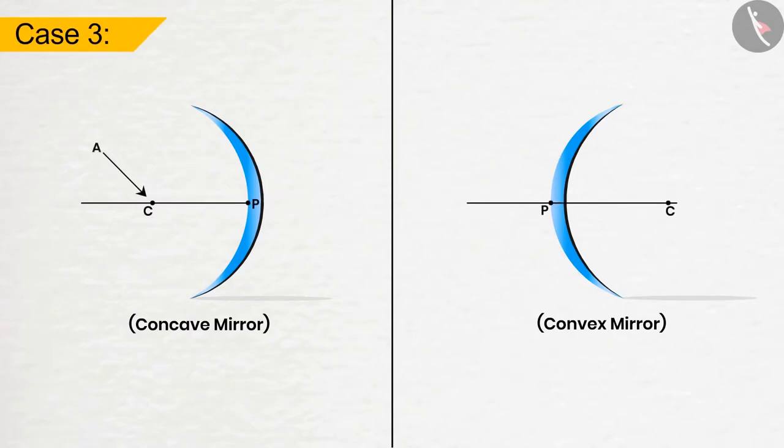Case 3. If the ray of light passes through the center of curvature of the concave mirror or appears to go towards the center of curvature of the convex mirror, it will travel back from the same path after reflection.